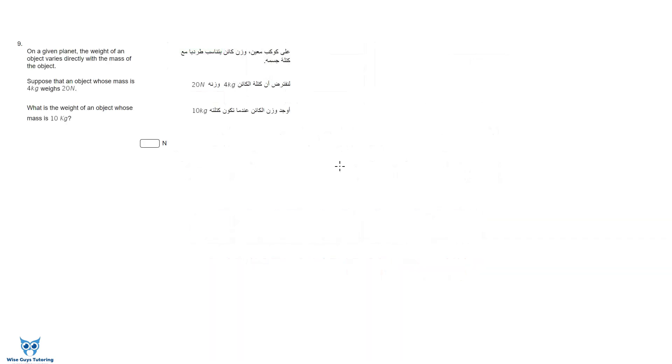Here's the first question. On a given planet the weight of an object varies directly with the mass of the object. Suppose that an object whose mass is 4 kilograms weighs 20 Newtons. What is the weight of an object whose mass is 10 kilograms?